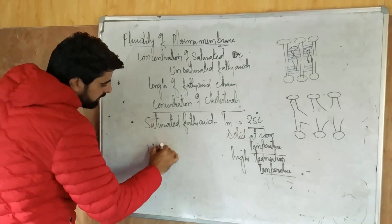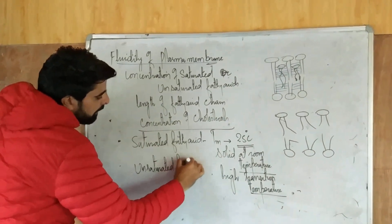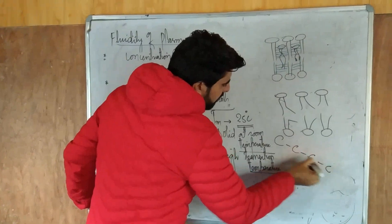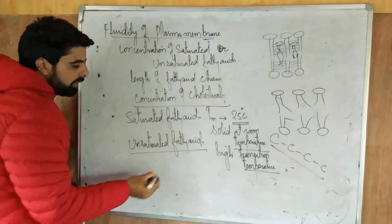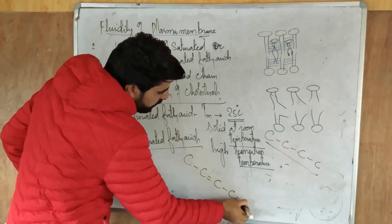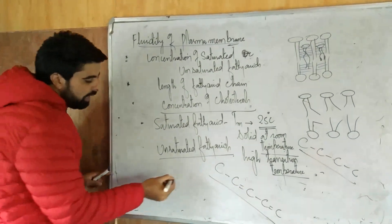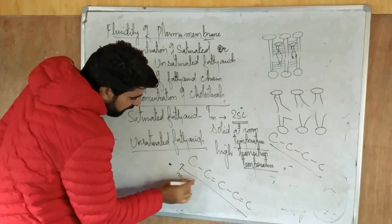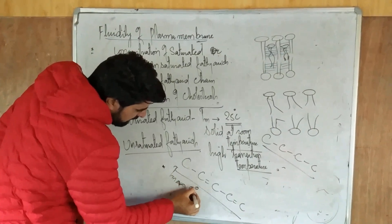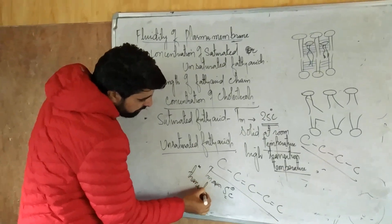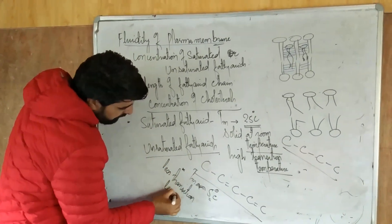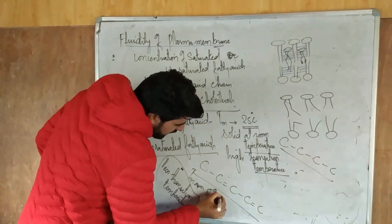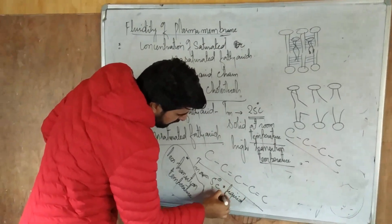Unsaturated fatty acids have carbon-carbon double bonds as well as single bonds. If you take a saturated fatty acid, they have carbon-carbon single bonds, so they are more compact and have more melting temperature. But if you take unsaturated fatty acids, they have carbon double bonds and single bonds, so they have less compactness. Less compactness means their melting temperature is very less. The Tm value for unsaturated fatty acids is approximately 5 degrees Celsius. So they have a less transition temperature, and the very important point is that they are liquid at room temperature.